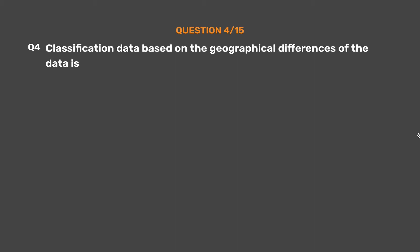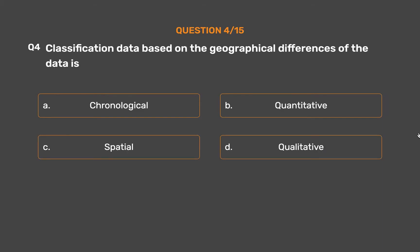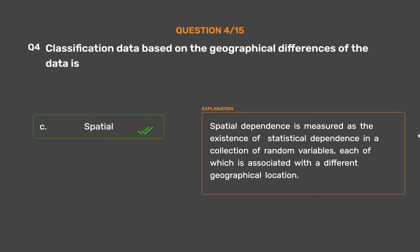Question number 4. Classification of data based on the geographical differences of the data is: Option A: Chronological. Option B: Quantitative. Option C: Spatial. Option D: Qualitative. The correct answer is Option C: Spatial. Spatial dependence is measured as the existence of statistical dependence in a collection of random variables, each of which is associated with a different geographical location.